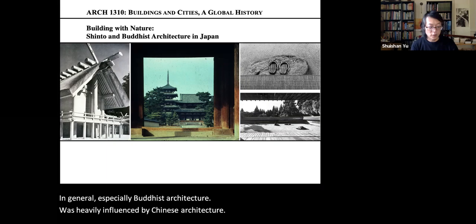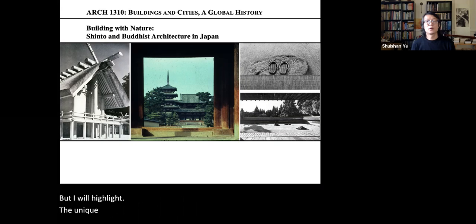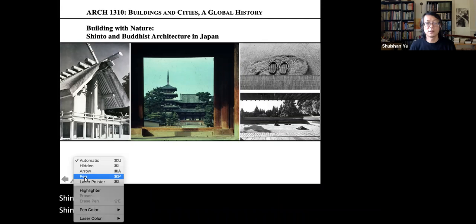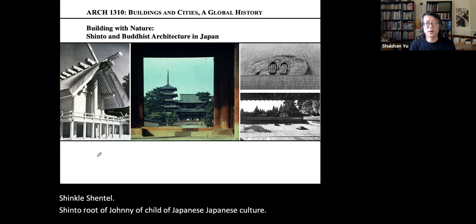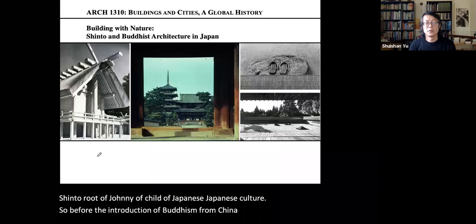I will highlight the unique Japanese features, especially the uniqueness that came from the Shinto roots of Japanese culture. Before the introduction of Buddhism from China via Korea, Japan had its own religion known as Shinto.